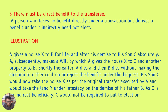Illustration: A gives house X to B for life and after his demise to B's son C absolutely. A subsequently makes a will by which A gives house X to C and another property to B. Shortly thereafter A dies and then B dies without making the election to either confirm or reject the benefit under the bequest. B's son C would now take house X as per the original transfer executed by A, and would take land Y under intestacy on the demise of his father B. As C is an inducted beneficiary, C would not be required to be put to election.